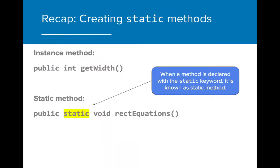To create a static method, we simply need to include the keyword static in the method declaration. This indicates that the method can be used by the class name itself, and not necessarily through a class object.